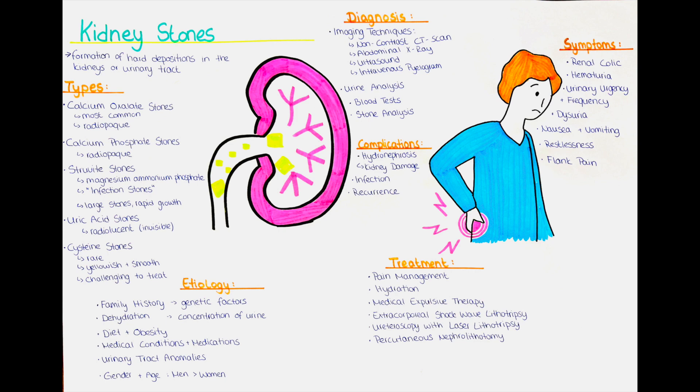Another type is uric acid stones. Those stones are radiolucent, meaning they are not visible on standard X-rays. They may not be detected unless specialized imaging techniques such as CT scans or ultrasound with color Doppler are used. The last type is cystine stones. Those stones are rare and are composed of the amino acid cystine. They can be yellowish and have a smooth appearance.